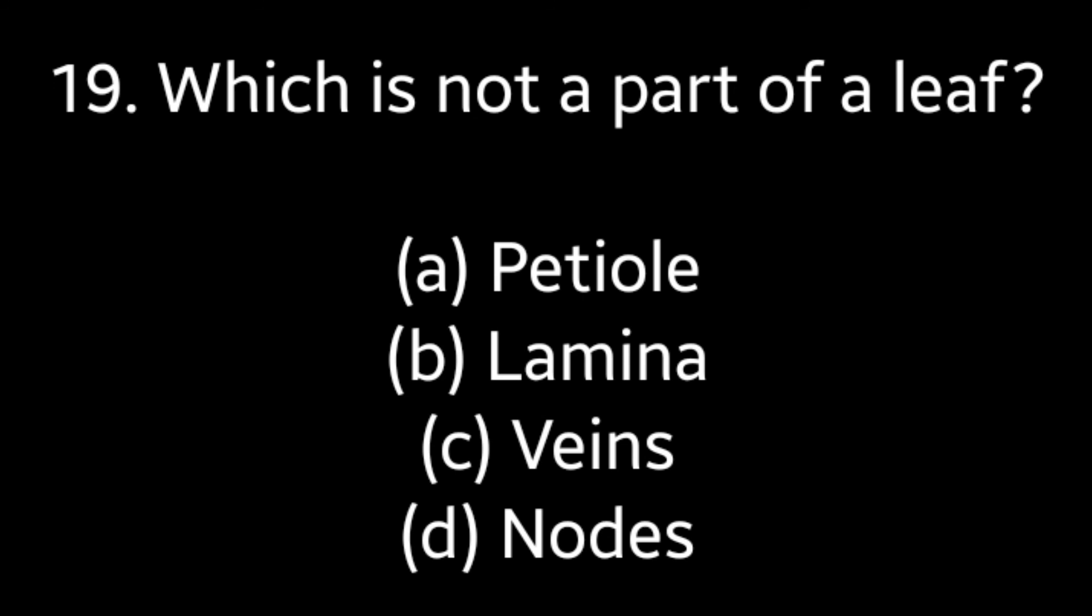Question number 19: Which is not a part of a leaf? Petiole, Lamina, Veins, or Nodes. Answer is option D, Nodes.